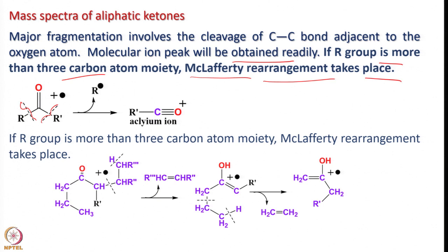What is this rearrangement? The cleavage occurs on C-C bonds next to oxygen — these two are quite possible sites for fragmentation. Whether this happens or this happens, the R radical comes out and we get the acylium ion. If the R group has more than 3 carbon atoms, that means if you have a longer chain on either side, then McLafferty rearrangement takes place.